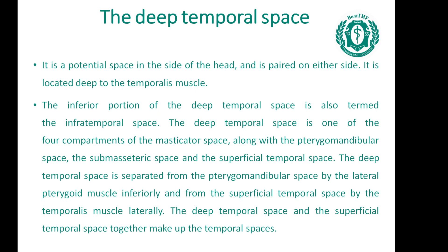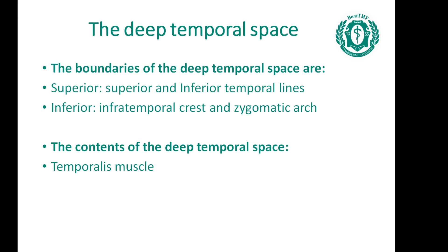The deep temporal space is a potential space in the side of the head, paired on either side. It is located deep to the temporalis muscle. The inferior portion of the deep temporal space is also termed the infratemporal space. It is one of the four compartments of the masticator space, along with the pterygomandibular space, the submasseteric space and the superficial temporal space. The deep temporal space is separated from the pterygomandibular space by the lateral pterygoid muscle inferiorly, and from the superficial temporal space by the temporalis muscle laterally. The boundaries are the superior and inferior temporalis lines, the infratemporal crest, and the zygomatic arch. Contents include the temporalis muscle.